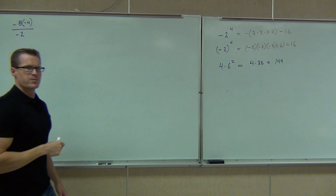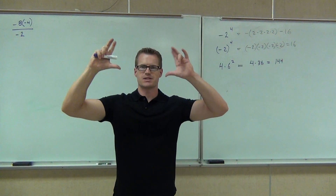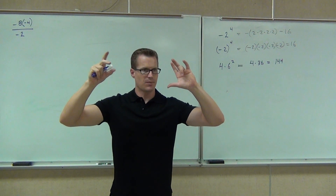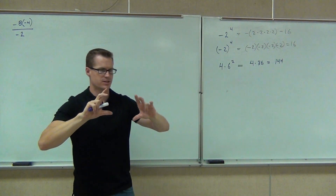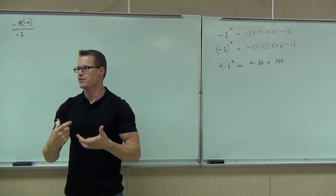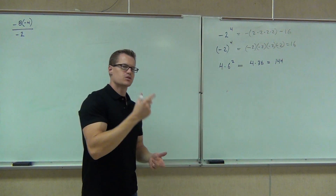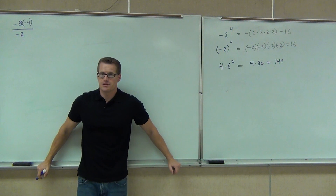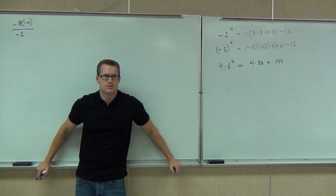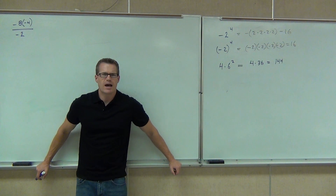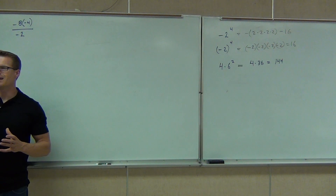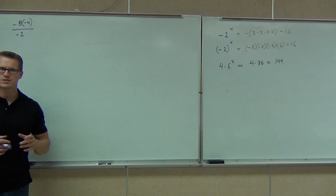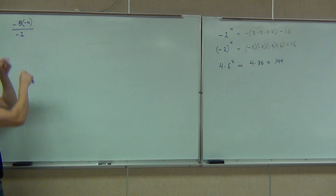I need to refresh your memory that division acts as a parenthesis in itself. When you get a problem with a fraction, you do the numerator first and the denominator independently, and then do the division after that. So when we look at this problem, by counting the number of negative signs, can you tell me if the answer is going to be positive or negative? Order of operations says do parentheses first — and here, there's an implied parenthesis around the numerator.